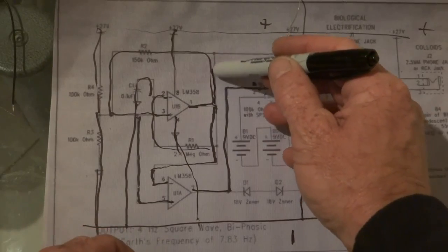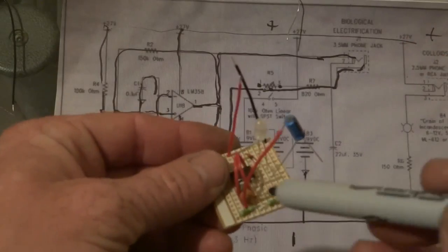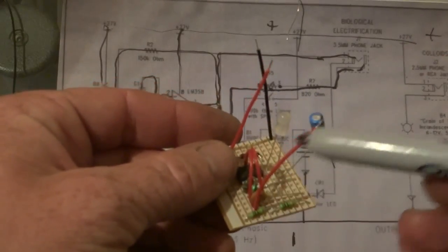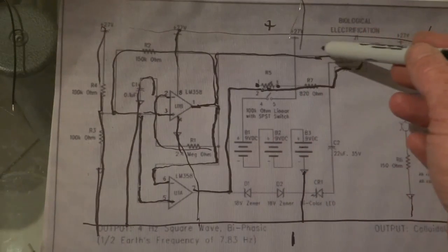Then we have this one here that comes out here, which goes to the plug, which is the number one wire. This basically comes out of number one, goes to the plug.